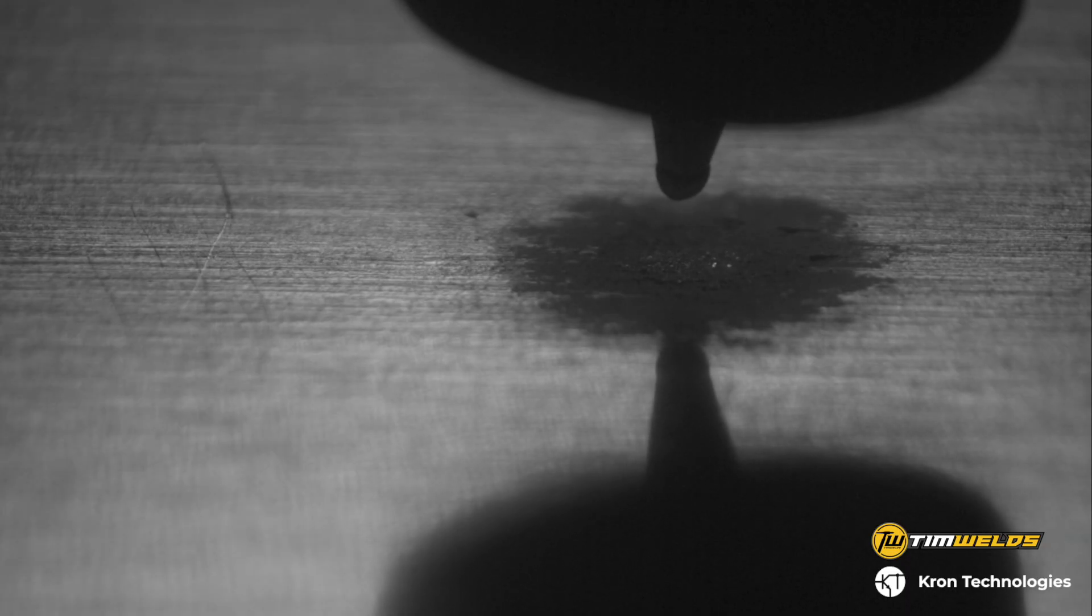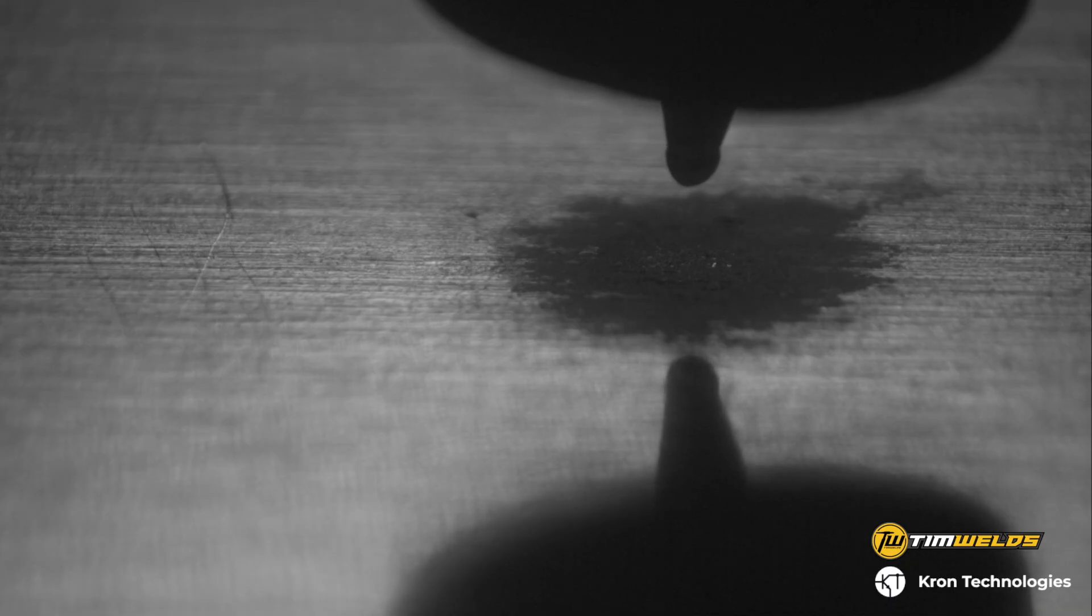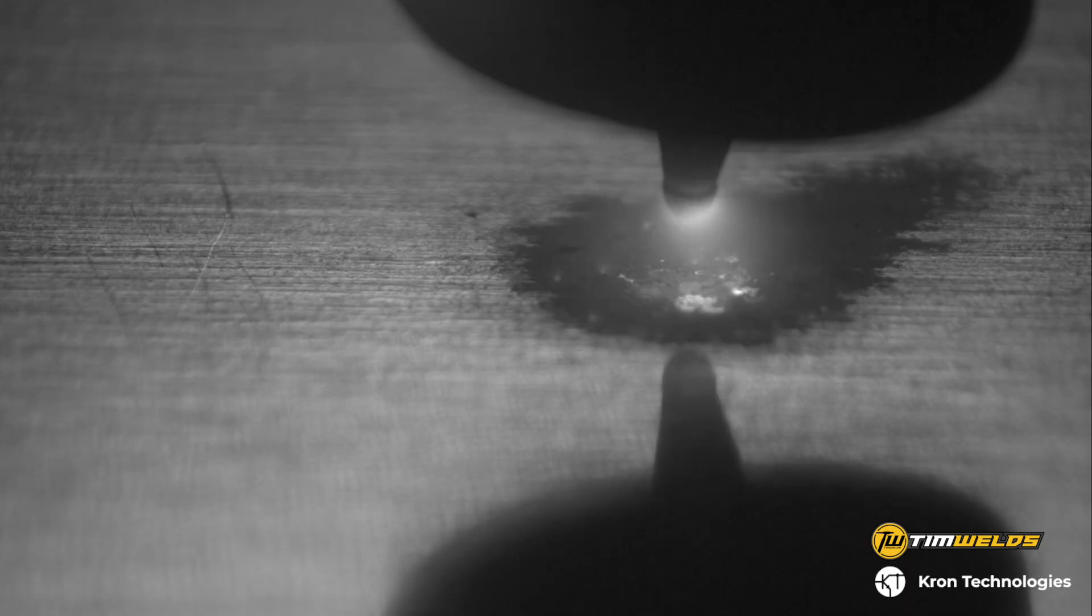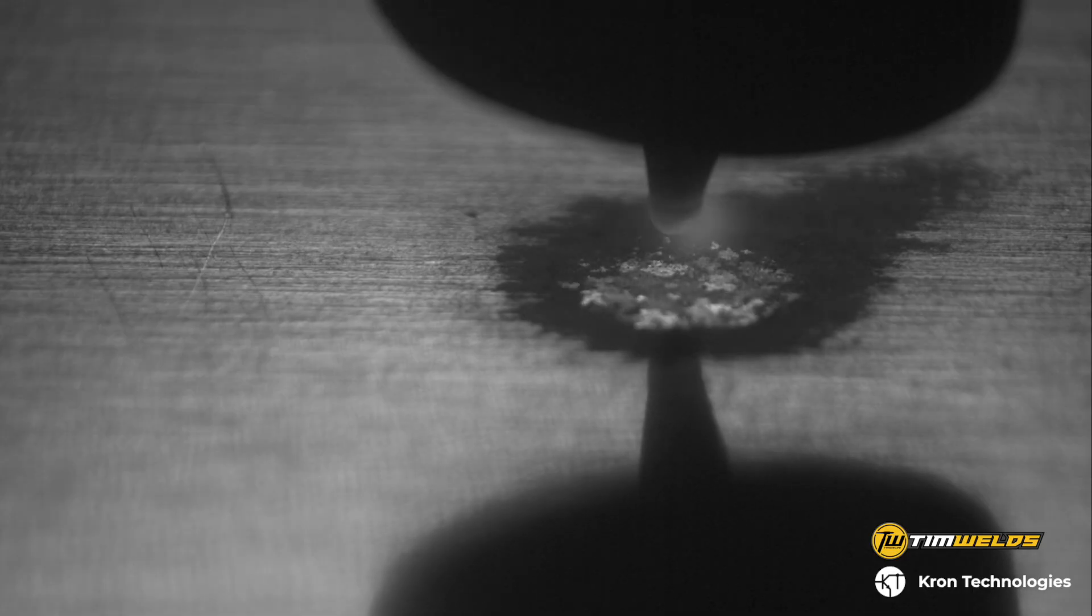Notice those flickers that happen on the surface of the material. Each time that flicker happens, it's when the torch is changing to electrode positive and it's just breaking up some of that surface layer to clean it and expose nice fresh bare metal that can have an acceptable weld. Notice how it's breaking it up.